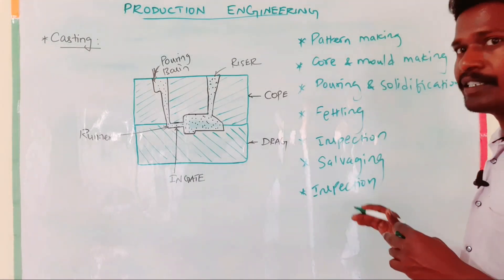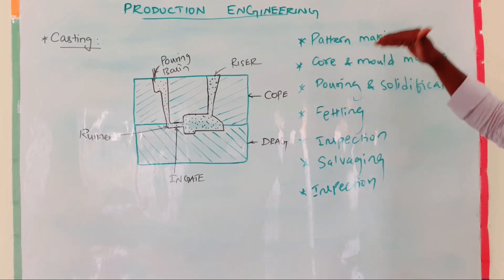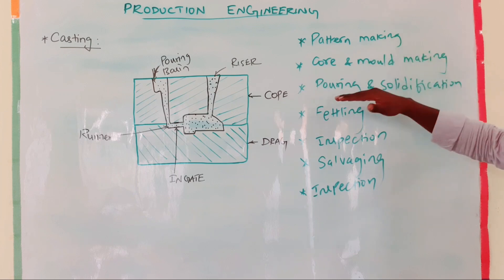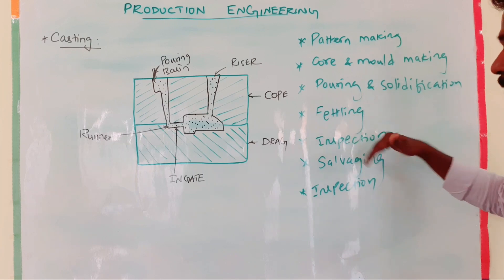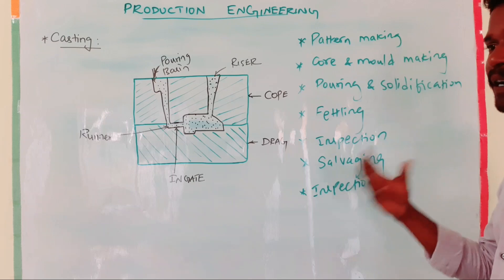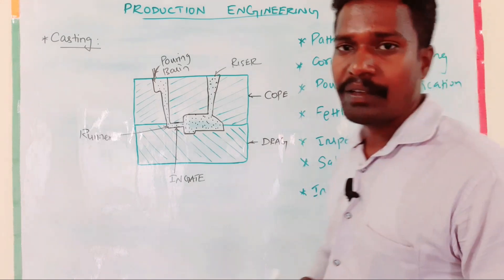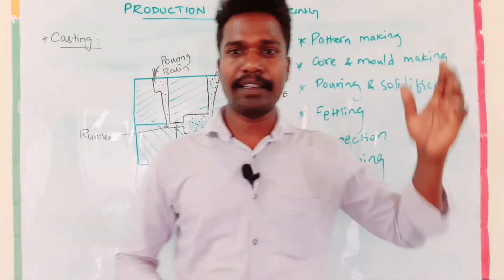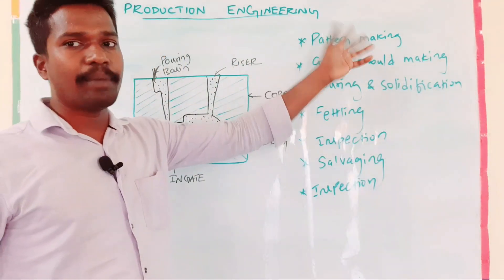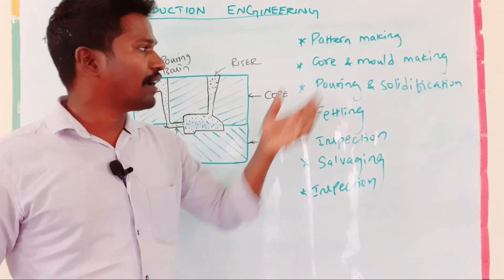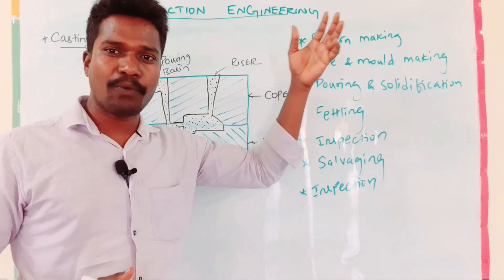After the fourth part — inspection — if there is a problem in the process, you will need to solve the problem and then again inspection. That is the product you will get from the casting process. In this process, we will learn in detail: pattern making, core and mold making, pouring and solidification.